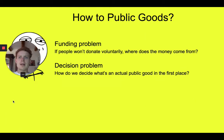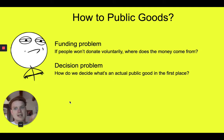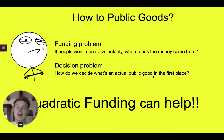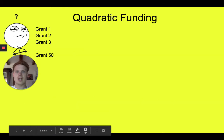Now, let's look a bit at public goods and the two problems we often find. First, a funding problem: if people won't donate voluntarily, where does the money actually come from? And second, the decision problem: how do we actually decide what's a public good in the first place? Let's get on to the topic of quadratic finance — also called quadratic funding — and it addresses this exact challenge.